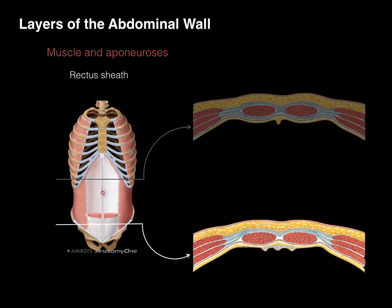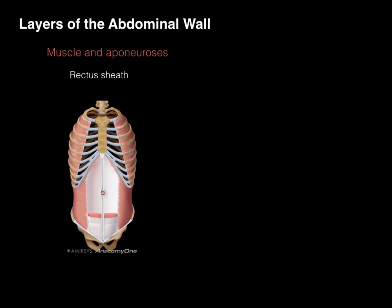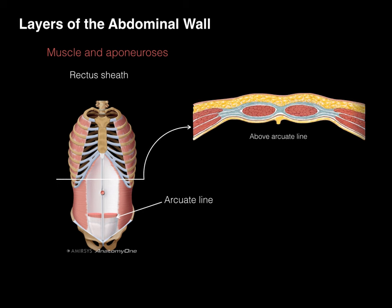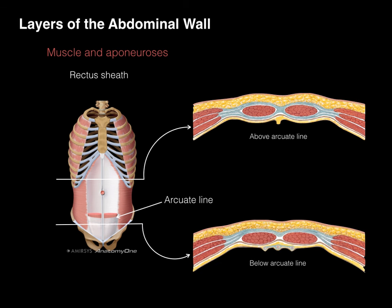In cross-section below the umbilicus, we again see the external oblique, internal oblique, transverse abdominis, rectus abdominis, and linea alba. However, all three aponeuroses course in front of the rectus abdominis, and none course behind. The only supportive tissue behind the rectus abdominis this low is the transversalis fascia. The arcuate line is the anatomical landmark for this transition: above it, aponeuroses course both in front of and behind the rectus abdominis; below it, all aponeuroses course only in front.